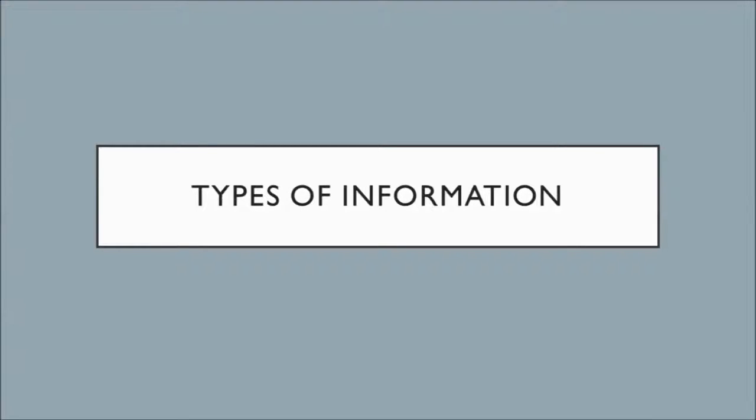We're going to talk about different types of information — three specific types you're likely to come across when searching these databases: popular literature, scholarly literature, and trade literature or publications.